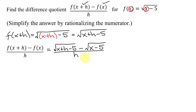Can we simplify anything? The two radicals in the numerator are unlike, so they can't combine, and it doesn't look like there's anything else we can do. But in calculus, we need to figure out what happens when h approaches 0. In this case, if h were 0, the expression would be undefined. That's why we're told to rationalize the numerator.